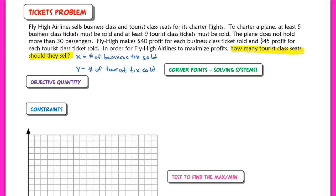Now your objective quantity is relating to maximizing profits. We want to maximize profits, which means we're going to go towards the sentence that talks about how much profit they make. And right here it says they make $40 profit for business class tickets and $45 for tourist tickets.